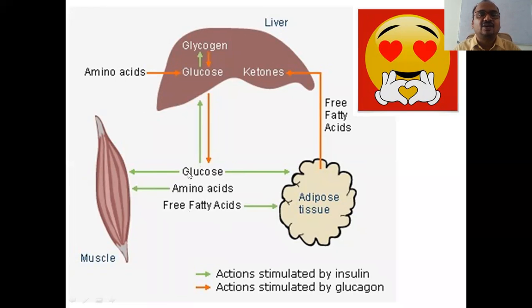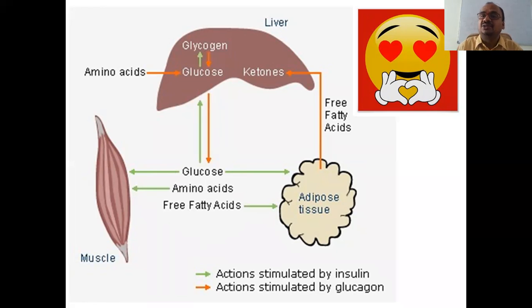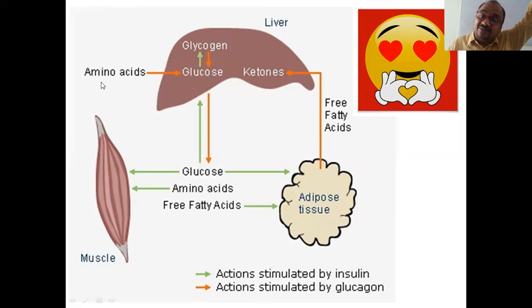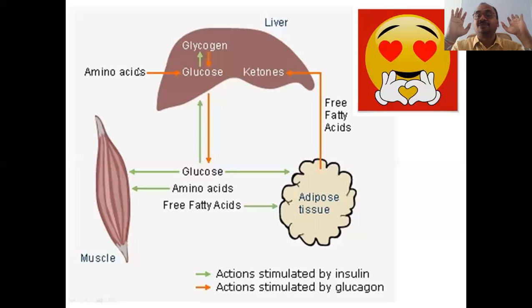Glucose present in the blood is taken up by the liver with the help of insulin (ash color action). Opposite to this, glucagon (orange color) causes an increase in blood glucose by releasing glucose from the liver into the blood, raising blood glucose concentration. Similarly, glucagon increases gluconeogenesis — converting amino acids from proteins into glucose. From fats in adipose tissue, glucagon promotes the development of ketones.